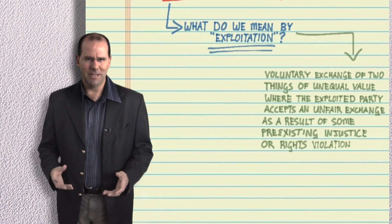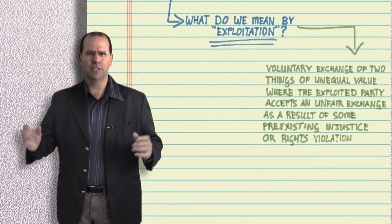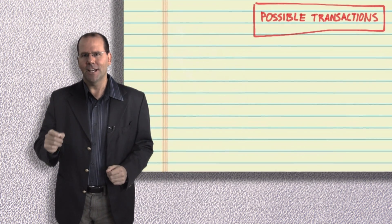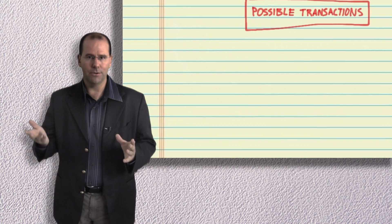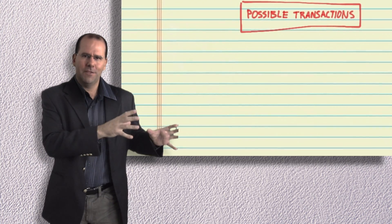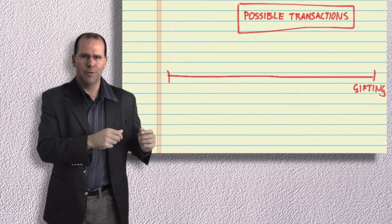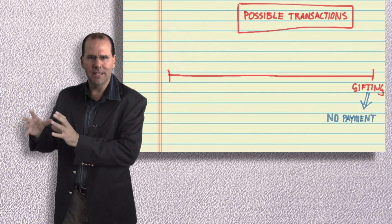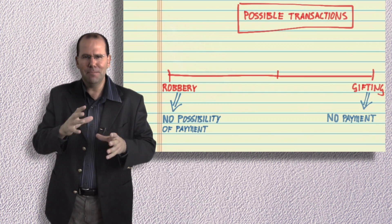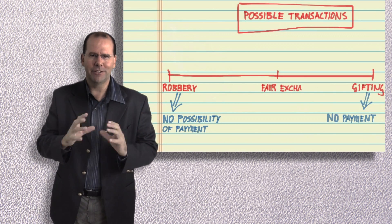To understand this a little better, let's consider this spectrum of possible transactions between two parties. In any transaction goods and services go from at least one party to another and sometimes in both directions. At one end of the spectrum is gifting with no expectation of payment and at the other end of the spectrum is robbery with no possibility of payment and in the middle somewhere there's an opportunity for fair exchange.